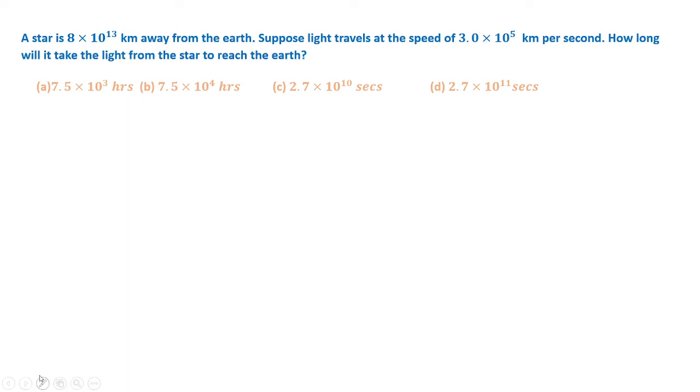So here we are given that a star is 8 × 10^13 km away from the earth.